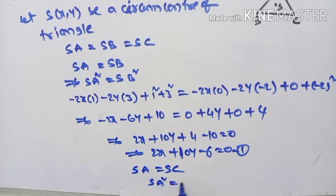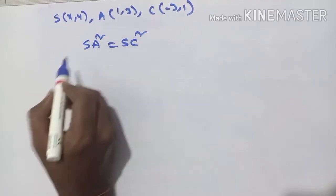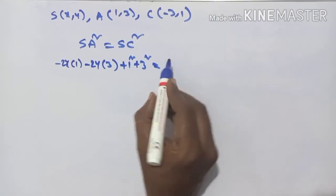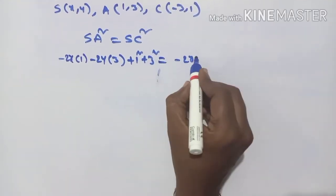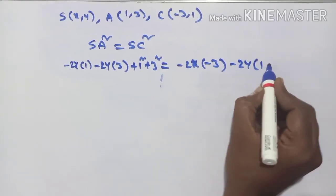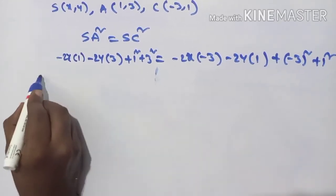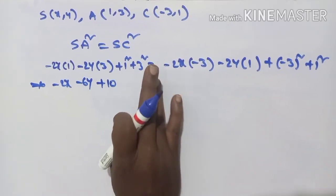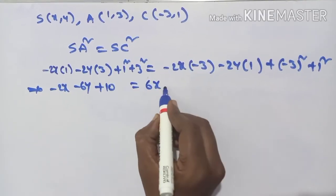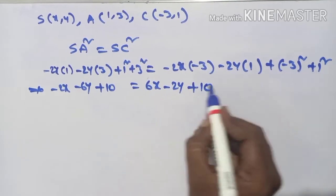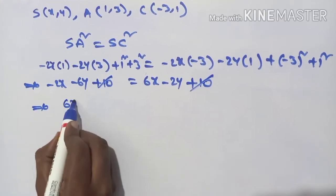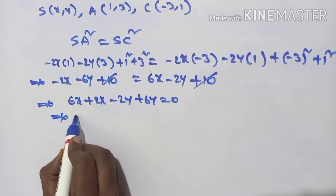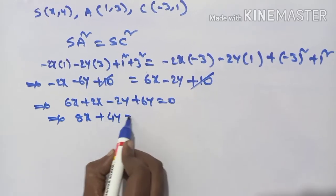Now SA = SC, which implies SA² = SC². SA² side: -2x(1) - 2y(3) + 1² + 3² = -2x - 6y + 10. SC² side: -2x(-3) - 2y(1) + (-3)² + 1² = 6x - 2y + 10. The 10 terms cancel. Taking remaining terms: 6x + 2x - 2y - 6y = 0, giving 8x + 4y = 0.